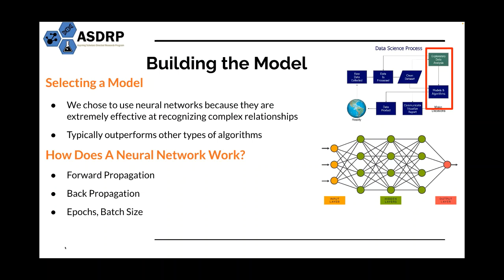Once we reach the output layer, the model uses backpropagation to improve its accuracy. During training, the model knows the actual label — in this case, whether or not the scan was demented. Once it receives an output, it checks against the actual result and calculates the error. This error is sent back to the input layer and the weights and biases are adjusted accordingly. As forward propagation and backpropagation repeat many times, the weights and biases are refined and ultimately an accurate model is built. It's worth noting this is a simplified version — there's a lot more involving epochs, batch size, and specific threshold functions, but the essential component of a neural network is basically a lot of math.